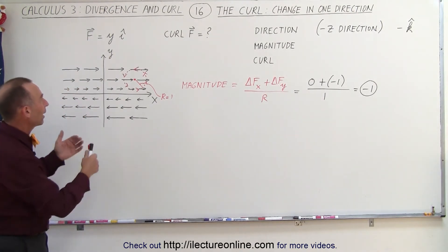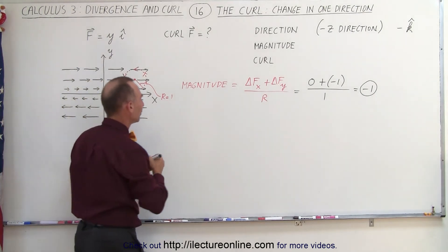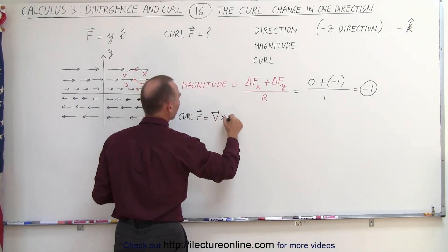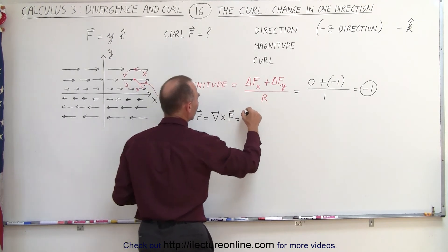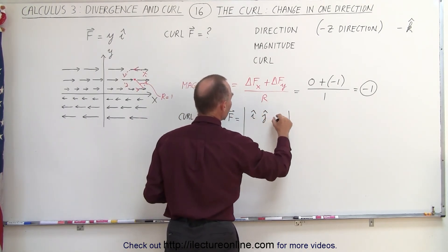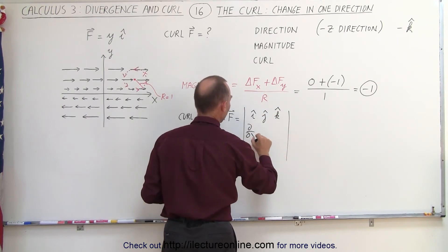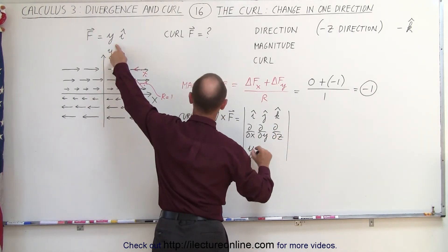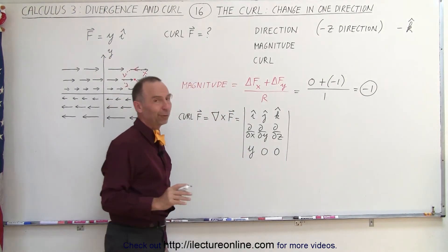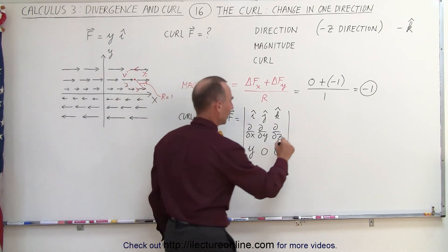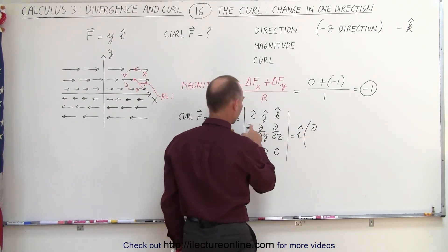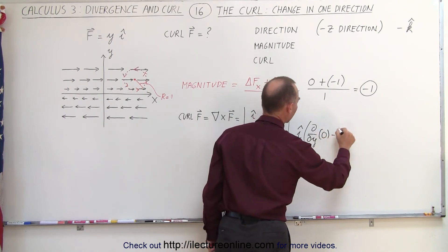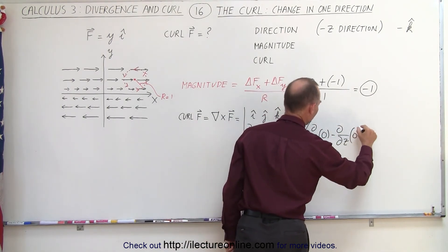To prove all this, let's calculate the actual curl for this example. The curl of F equals the del operator cross product with the vector field, which equals the determinant with i, j, k in the first row; partial with respect to x, y, z in the second row; and the components y, 0, 0 in the third row. This becomes i times the partial with respect to y of 0, minus the partial with respect to z of 0.